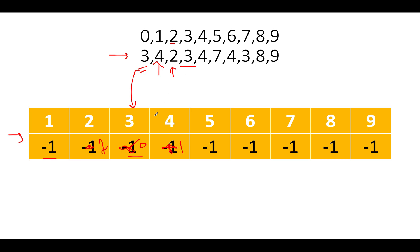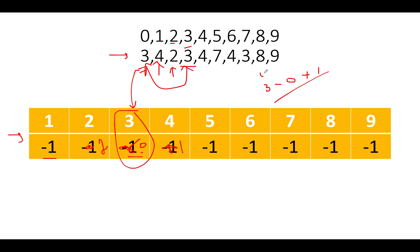Next we see three. Has three occurred in the past? Yes - the stored value is zero, which is not equal to minus one. We've found the first possibility of an answer. The formula to calculate the length is: current index (i) minus last occurrence plus one. The current index is three, last occurrence is zero, so three minus zero plus one gives us four. The first possibility of the answer is four.